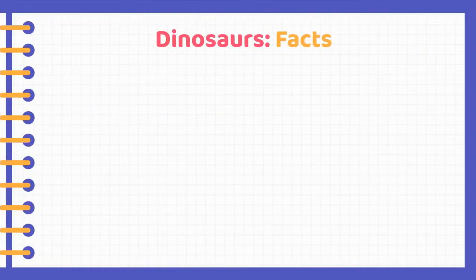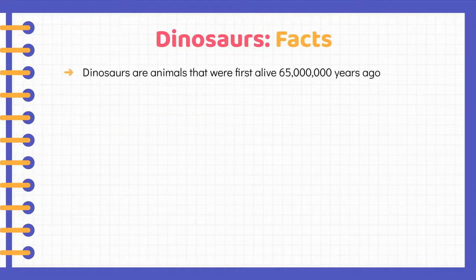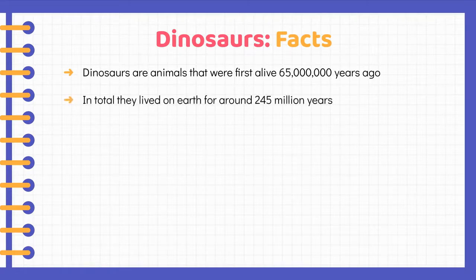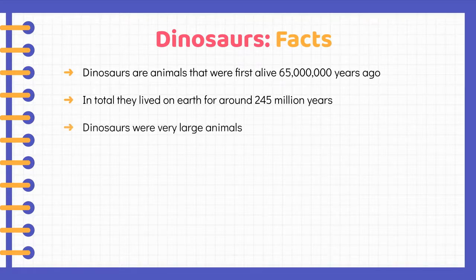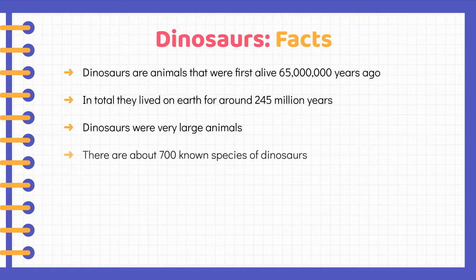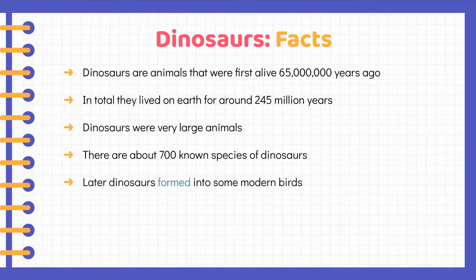Dinosaur Facts. Dinosaurs are animals that were first alive 65 million years ago. In total, they lived on Earth for around 245 million years. Dinosaurs were very large animals. There were about 700 known species of dinosaurs. Later, dinosaurs formed into some modern birds.